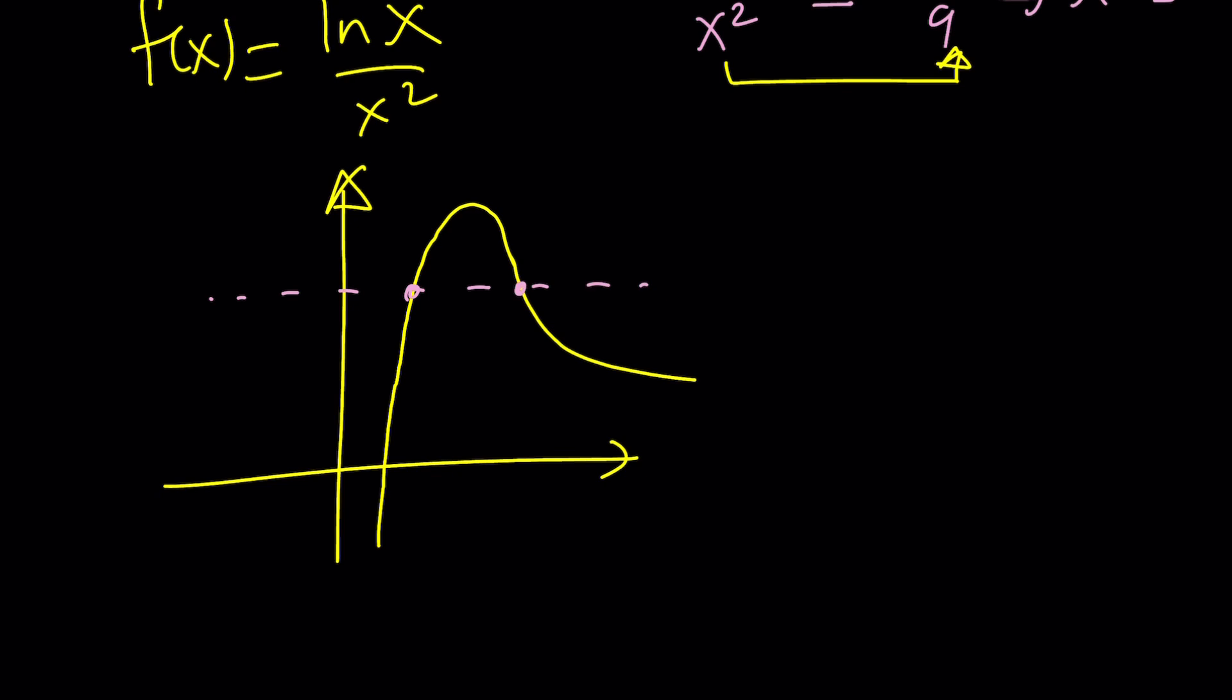For example, if your y value was here, then you would have a tangent line, and there would be only one x value. Or if it was above, that would be no solution. So, it really depends on where you hit the graph. Here, again, there would be one solution, right?